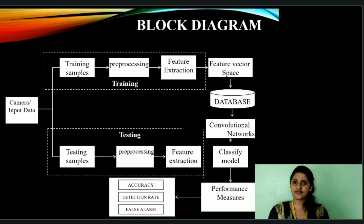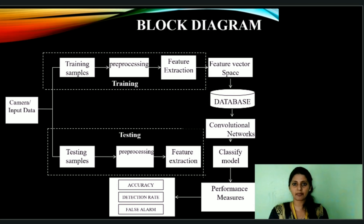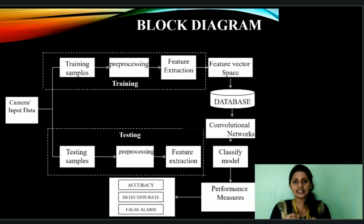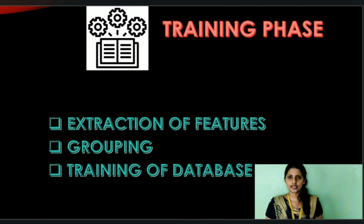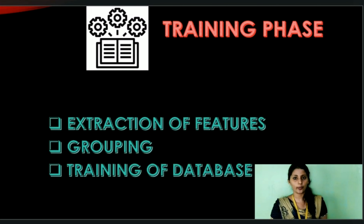There are two different phases in this workflow. The first phase is the training phase and the second phase is the testing phase. In the training phase, video input is given through the webcam, sampled into frames, and filed as training samples. These training samples are pre-processed using a method called CLAHE — contrast-limited adaptive histogram equalization. The pre-processed samples are then used for feature extraction, where the mouth and eyes are extracted using the spiral zones algorithm and stored in the database. There are three stages in the training process: extraction of features, grouping, and training.